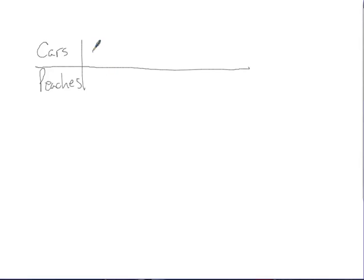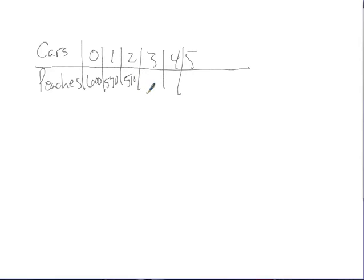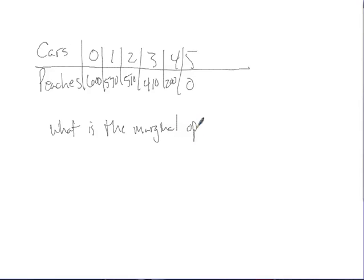Now let's use fresh numbers with cars and peaches — this is how you're probably going to see it on some tests. We have 0, 1, 2, 3, 4, and 5 cars. With peaches, we can produce 600, 570, 510, 410, 200, and 0. So what is the marginal opportunity cost of the third car?